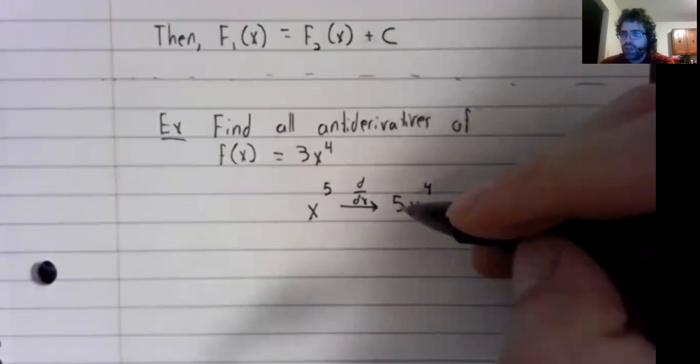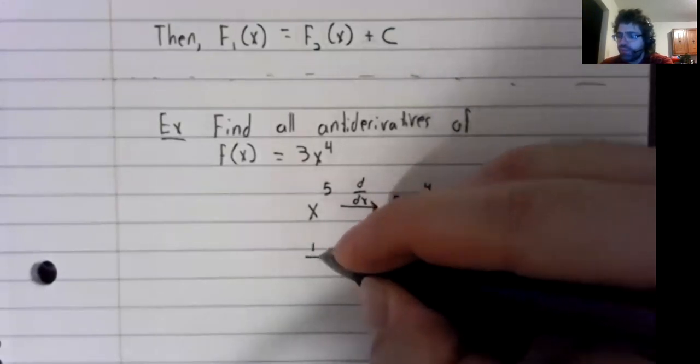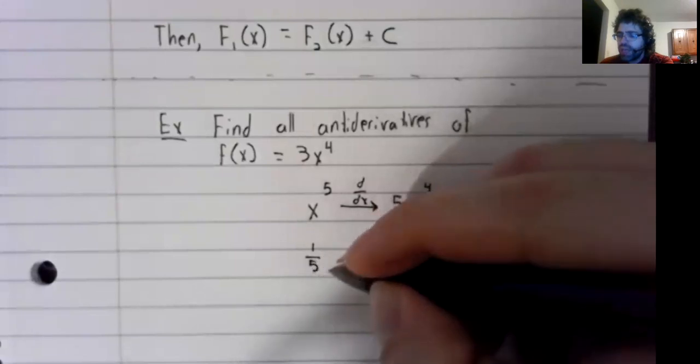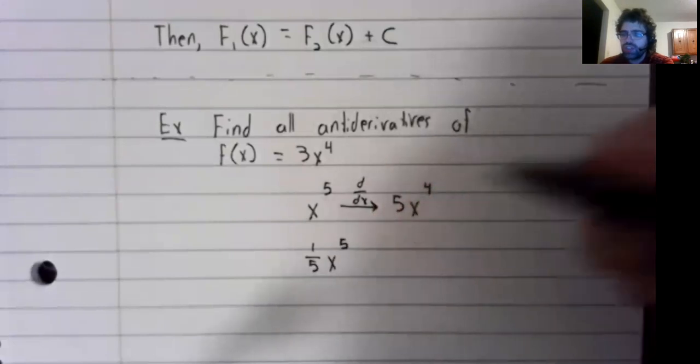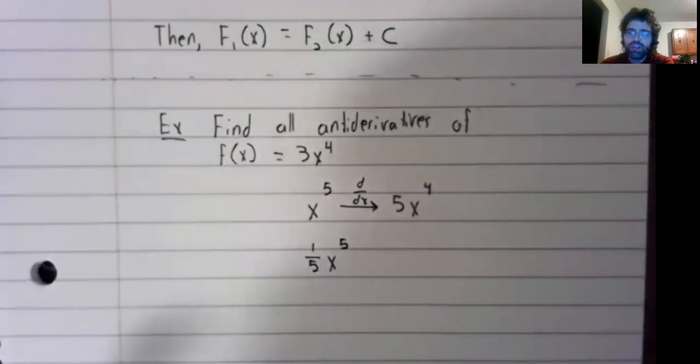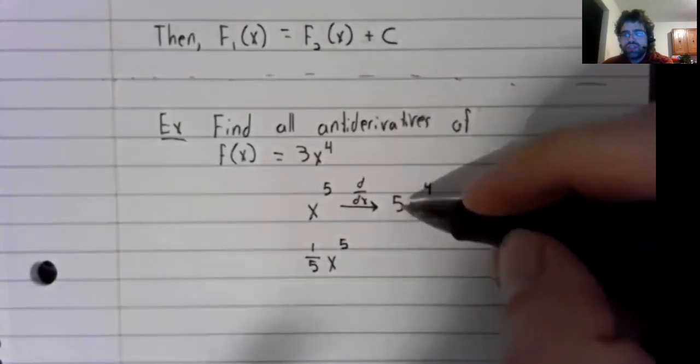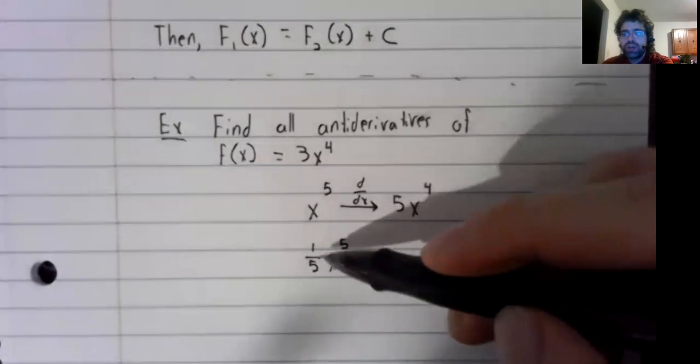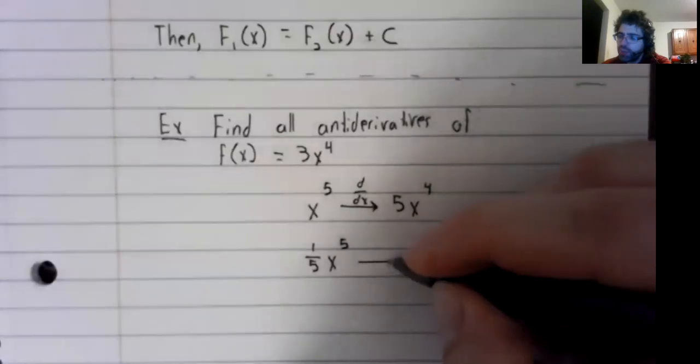We don't want this 5 here. Bearing in mind that constant multiples just sit along for the ride, as it were, we could solve this problem by putting a 1 fifth out to begin with.